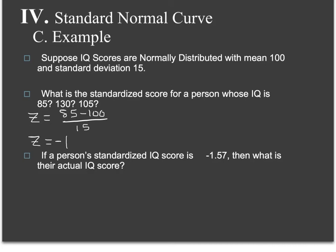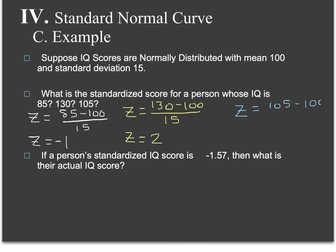For a person whose IQ is 130, z = (130 − 100) / 15. That's x minus mu over sigma: 130 minus 100 is 30, divided by 15 gives z = 2. For the last one, z = (105 − 100) / 15, so z = 5/15 = 1/3, which is approximately 0.33. That's how we take a point on a normal curve and standardize it.